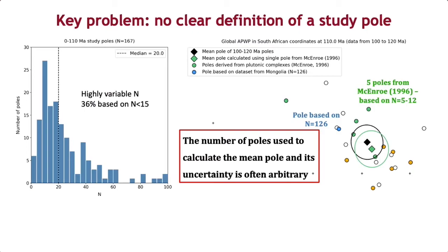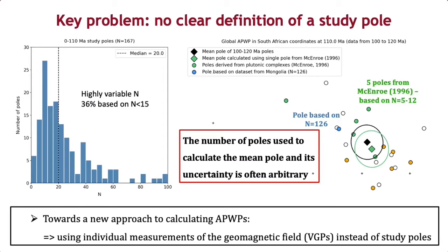On the other hand, a pole is included that is based on 126 lava sites from Mongolia. Now, if we were to average these five poles from the McEnroe 1996 study, this would already displace the mean pole by almost two degrees. This shows that the number of poles used to calculate the mean pole and its uncertainty is often arbitrary.